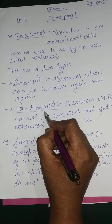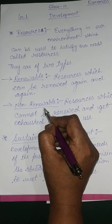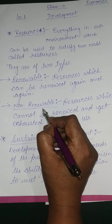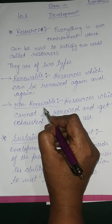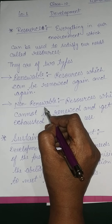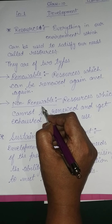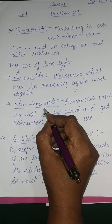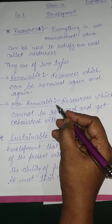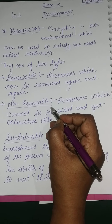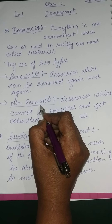Non-renewable resources are limited in quantity, and their formation takes millions of years, so we have to utilize these resources in a planned way. You can take the example of crude oil. Crude oil is very important for the development of a country and society, and it can be utilized by human beings in many ways. But crude oil is present in our environment in limited quantity and takes millions of years to form, so it is called a non-renewable resource.